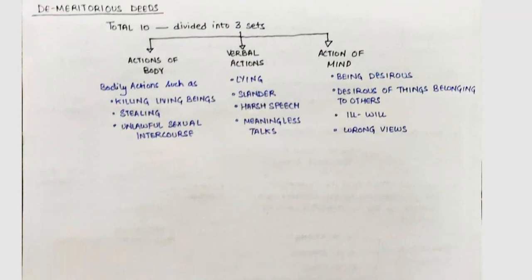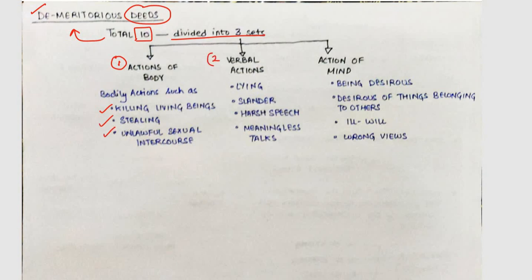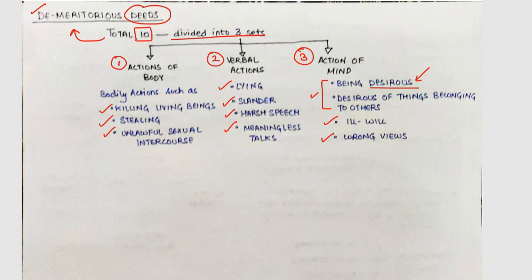In Buddhism there are ten demeritorious deeds divided into three sets. First set — actions of the body: killing living beings, stealing, and unlawful sexual intercourse. Second set — verbal actions: lying, slandering, harsh speech, and meaningless blabbering. Third set — actions of the mind: being desirous of what belongs to others, ill will, and wrong views. These ten deeds are harmful and can stop your path of progress.